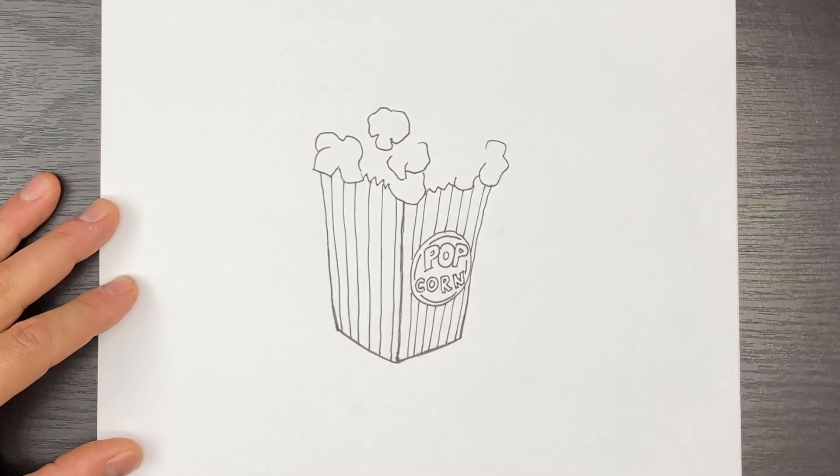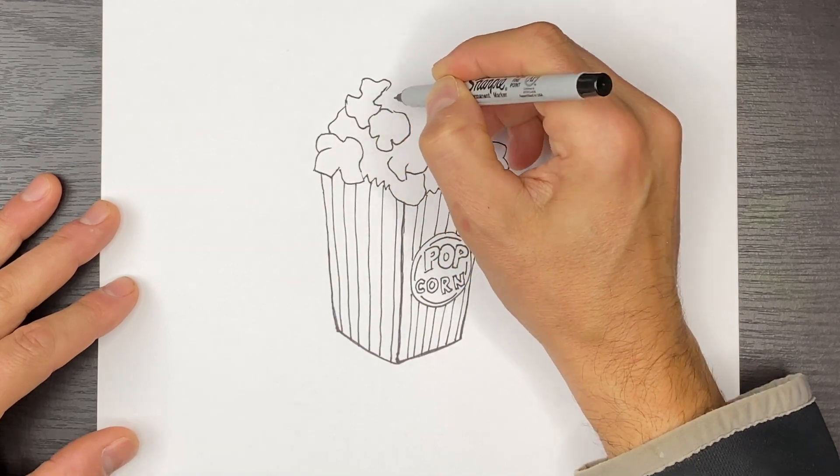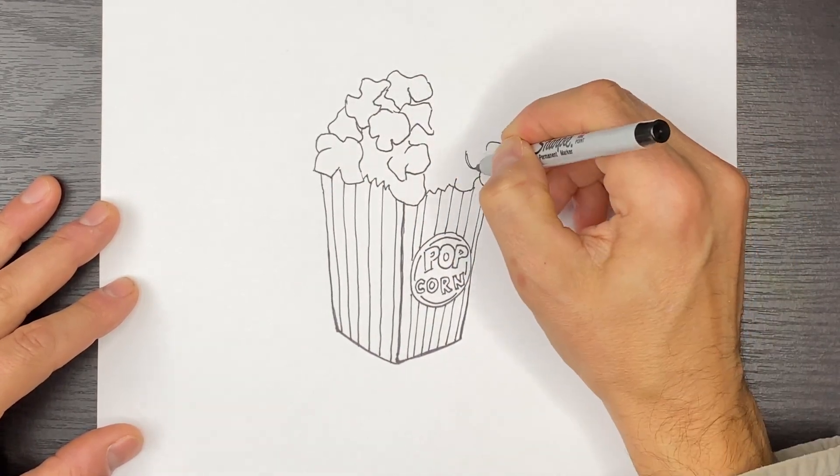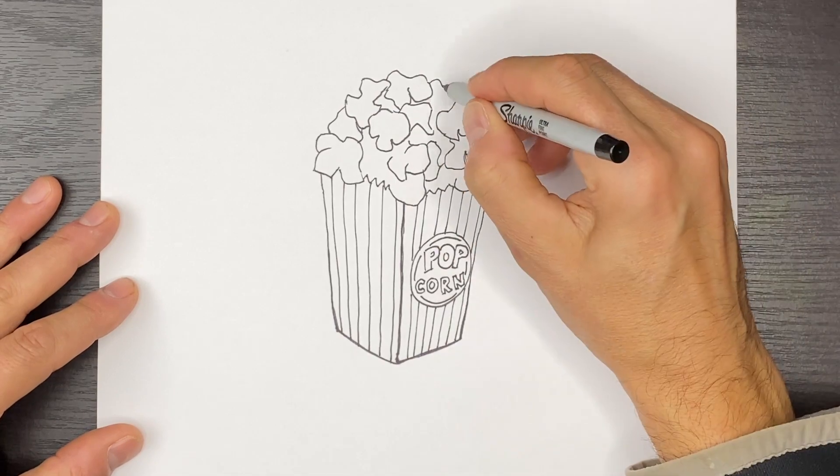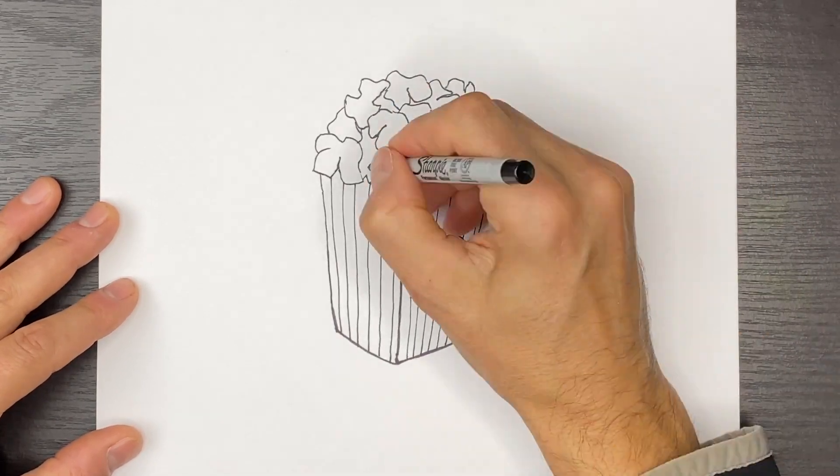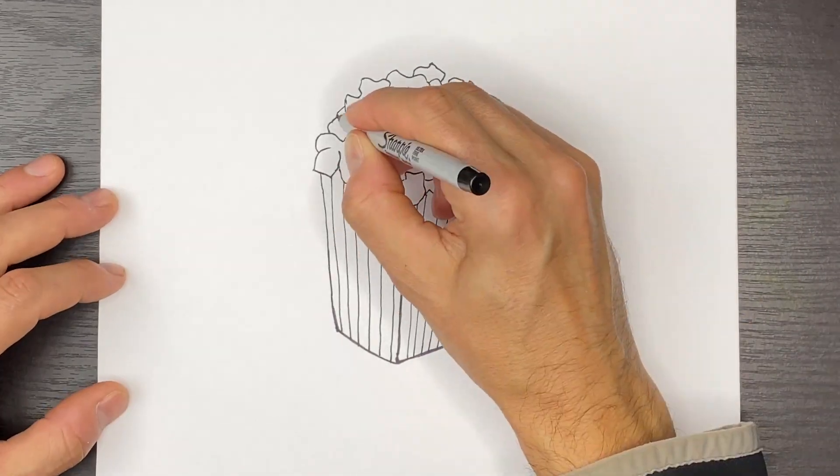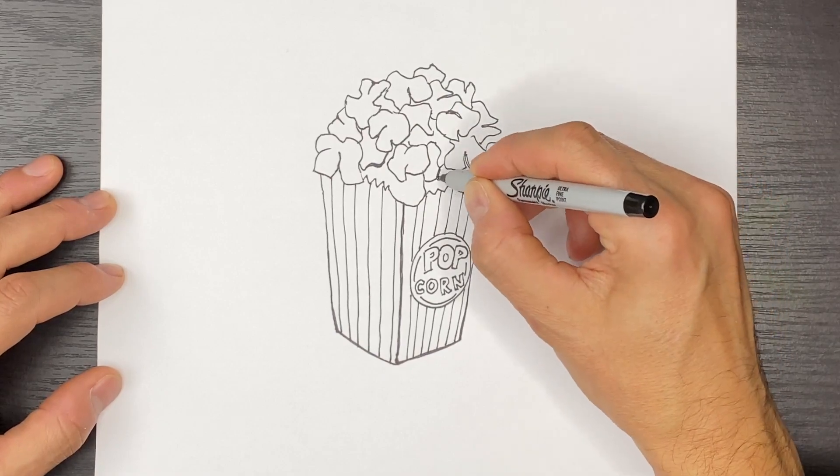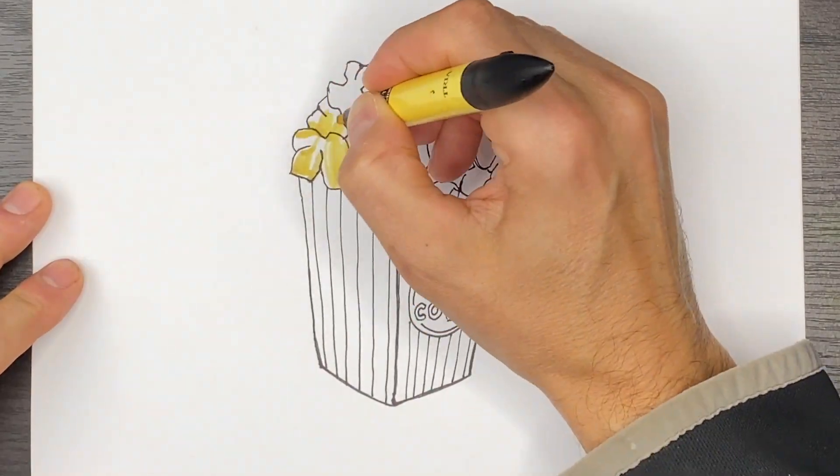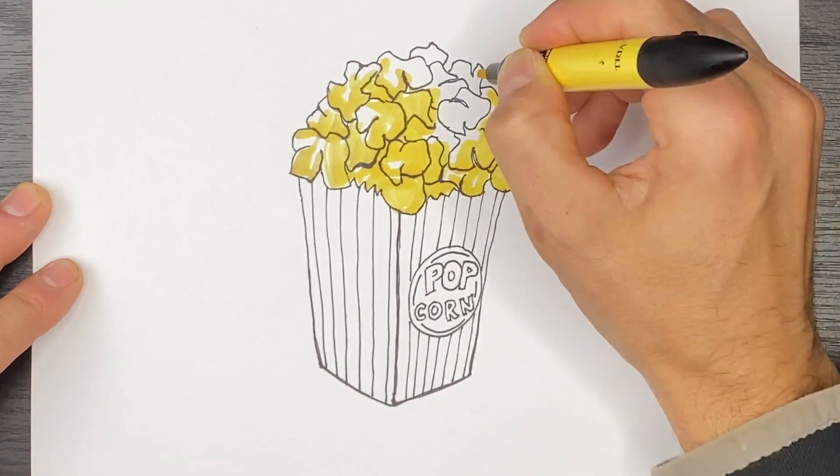And then we can finish off our popcorn shapes. And once you have the amount that you like, just add a couple more little detail shapes. We have a little bit of gaps. Okay, now my popcorn is drawn in. I'm going to use some markers to color this in.